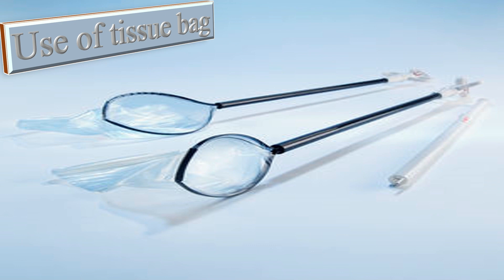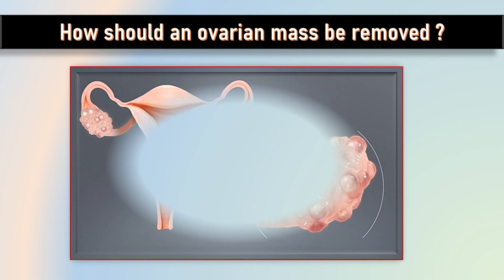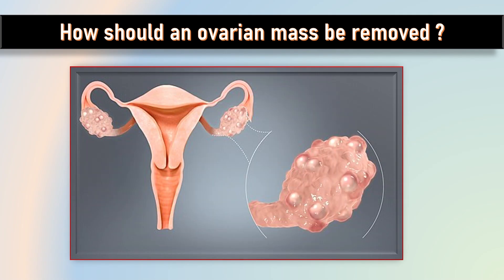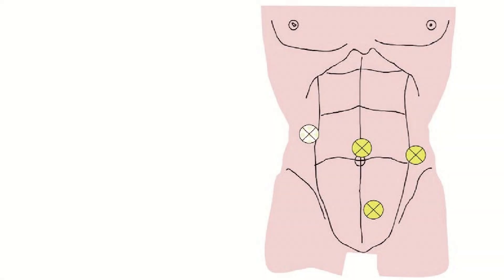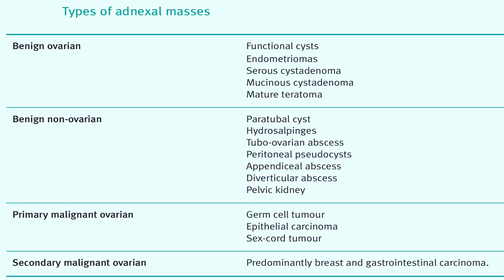The possibility of removing an ovary should be discussed with the woman preoperatively. Where possible, removal of the benign ovarian mass should be via the umbilical port, as this results in less postoperative pain and quicker retrieval time than when using a lateral port of the same size.